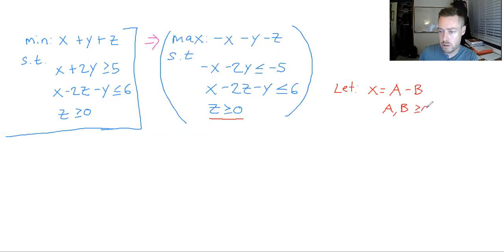And we're going to say that where A and B are both greater than or equal to zero. And same thing for y, so we're going to have y is equal to C minus D, where C and D are both greater than or equal to zero.